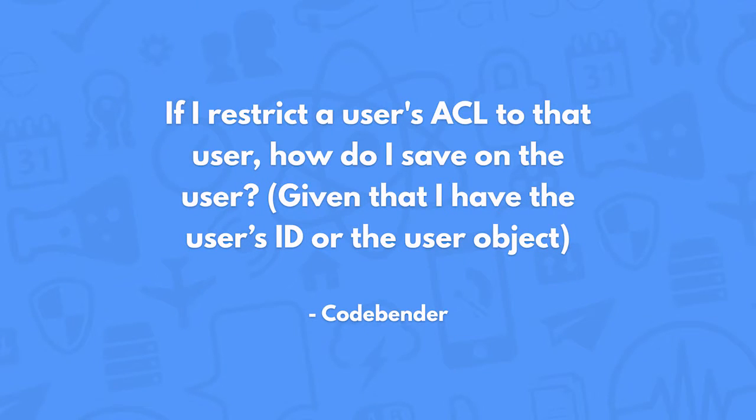It's not too hard to do with our current infrastructure. If I restrict a user's ACL to just that user, how do I save on that user? If you have an ACL on a user and it's only to that user, that user can already save itself to Parse. If you want to save it as a different user or without a user, you can do it through cloud code and use the master key, because that will override any ACLs that you have on the object.